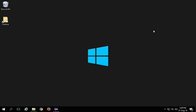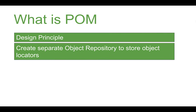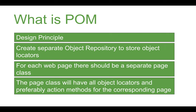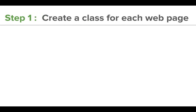So the definition of page object model: create a separate object repository to store object locators. For each web page there should be a separate page class. For every web page in your web application, you have to create a separate class to store the object locators. The page class will have all the object locators and preferably actions as well for the corresponding page. Now let us implement this — the first thing is we have to create a class for each web page.